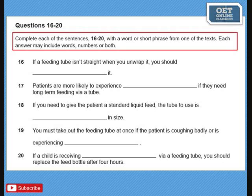Now let us look at questions 16 to 20. Complete each of the sentences 16 to 20 with a word or short phrase from one of the texts. Each answer may include words, numbers, or both. Question 16: If a feeding tube isn't straight when you unwrap it, you should [blank] it. Question 17: Patients are more likely to experience [blank] if they need long-term feeding via a tube. Question 18: If you need to give the patient a standard liquid feed, the tube to use is [blank] in size. Question 19: You must take out the feeding tube at once if the patient is coughing badly or is experiencing [blank]. Question 20: If a child is receiving [blank] via a feeding tube, you should replace the feed bottle after 4 hours.